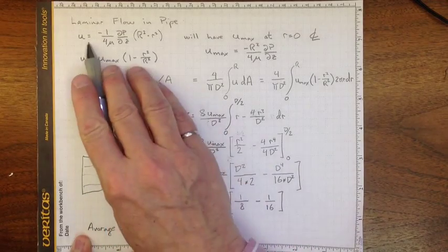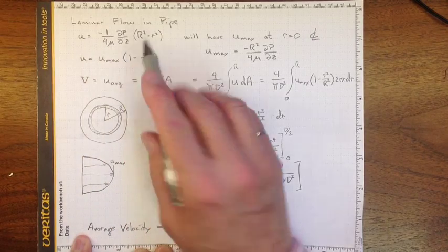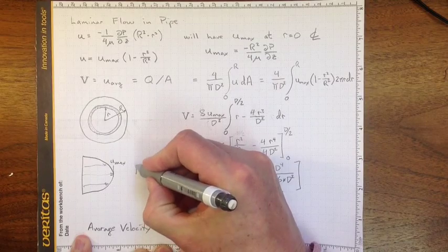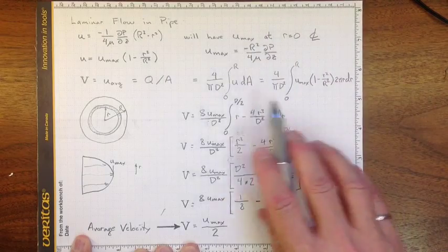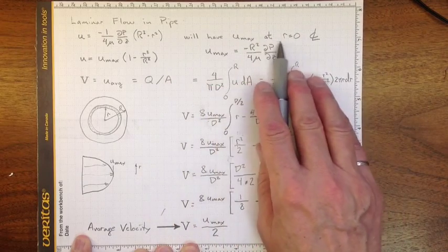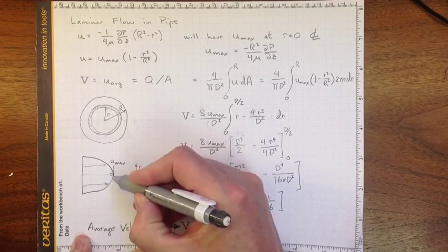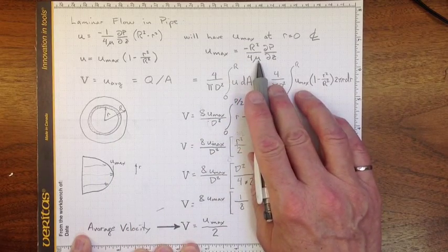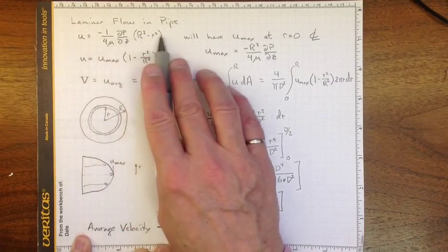and it's at a maximum u_max right in the center of the flow. So we got this expression before for the velocity as a function of position, the radius r in the pipe, and it will have a maximum at r equals zero on the center line,